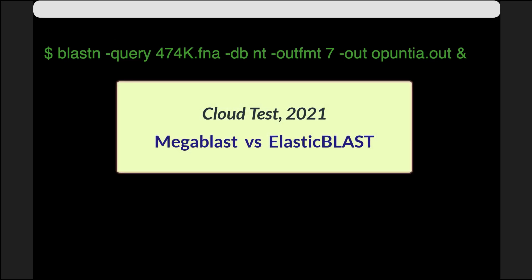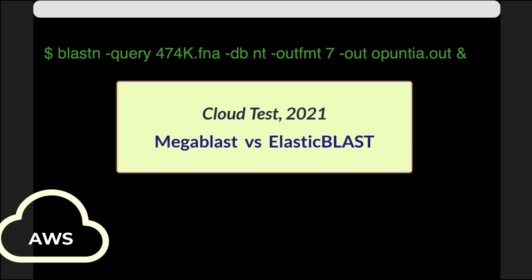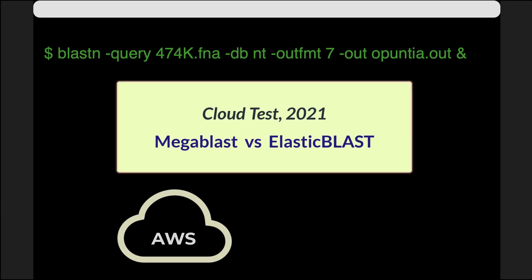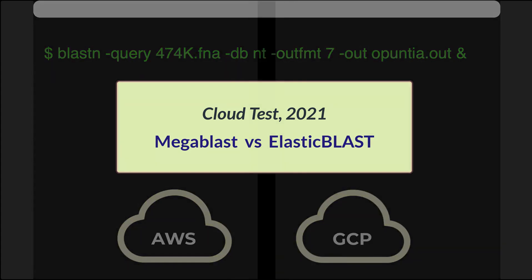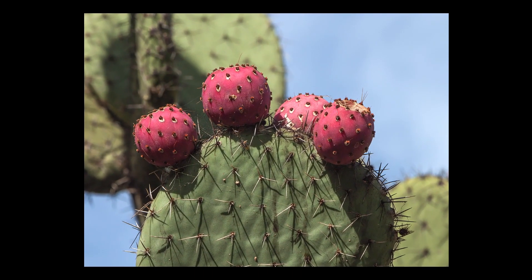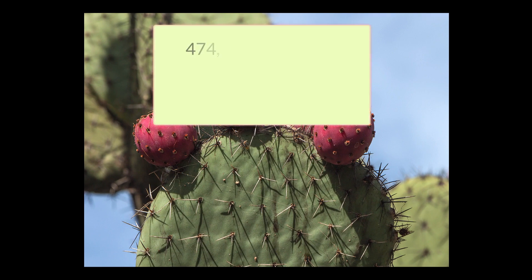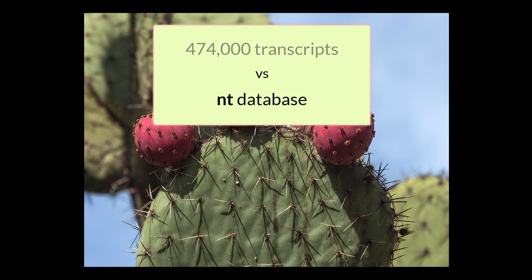We ran these searches in mid-2021 at Amazon Web Services, or AWS, and you can also run Elastic Blast on GCP, Google Cloud Platform. In this example, we took an assembled transcriptome from the prickly pear and aligned it to the full BLAST NT database. The query is over 474,000 transcripts, or more than 200 million bases.